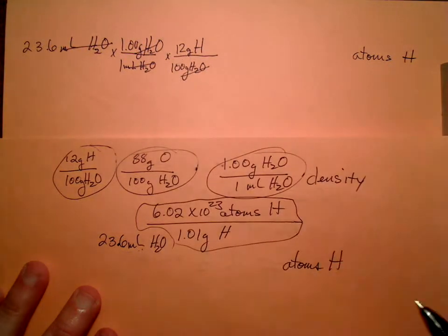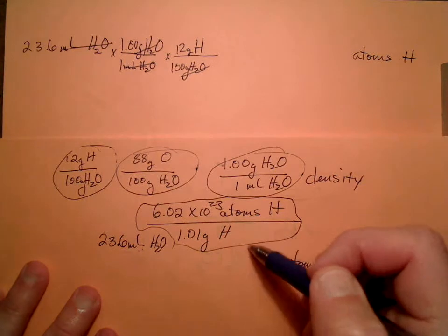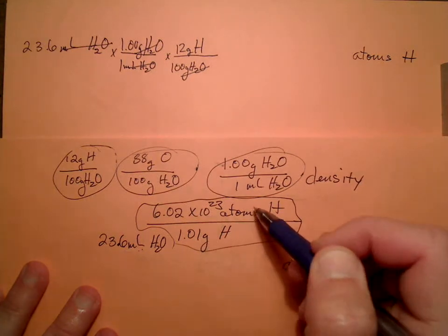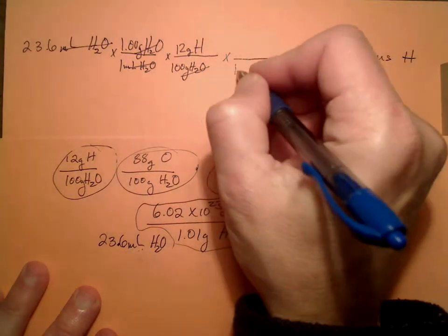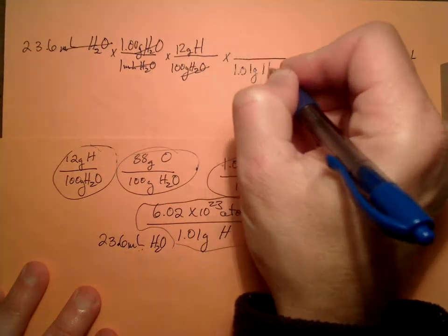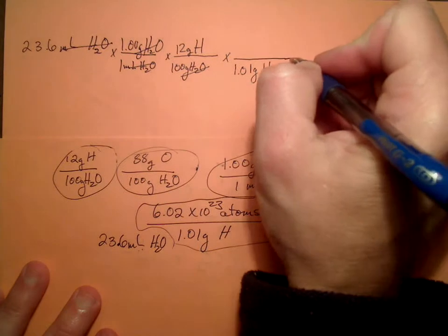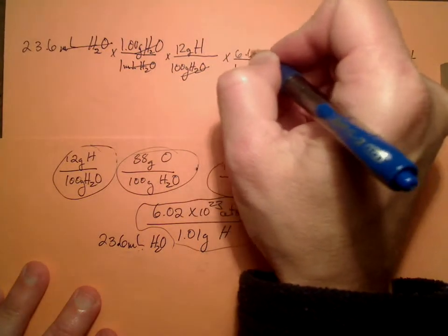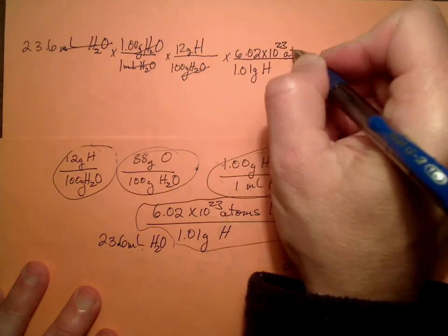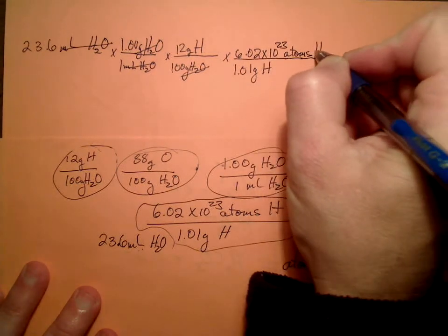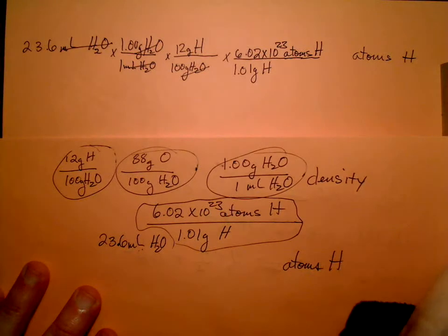Grams, I still need to get to atoms. Oh, look at that. I have a gram hydrogen conversion to atoms. So I know that for every 1.01 grams of hydrogen, I have 6.02 times 10 to the 23rd atoms of hydrogen. Bingo.